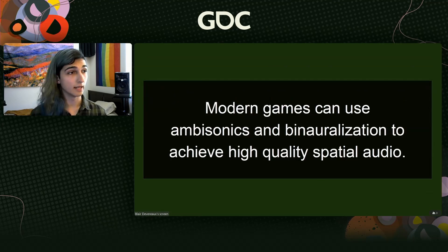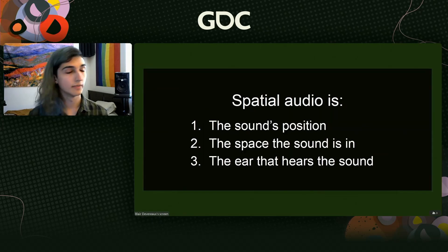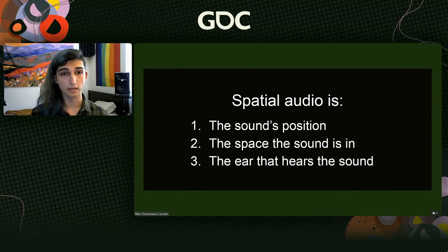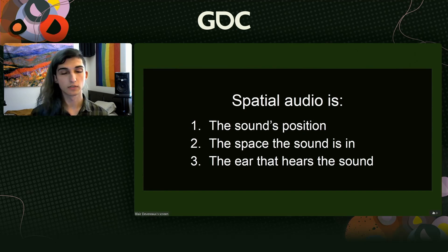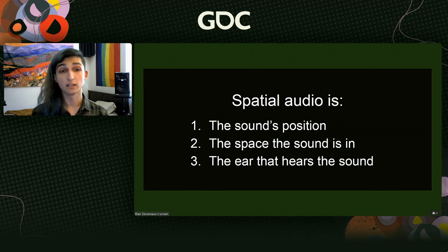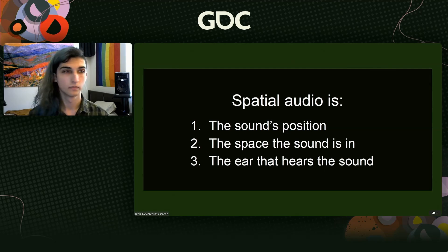I believe that modern games can use ambisonics and binauralization to achieve high-quality spatial audio. Ambisonics allows us to simulate the sound's position in a positionally accurate way, sampling an environment at up to 36 different channels. From there, we can simulate the reverberation of that space on those channels and convert it all into something the player can listen to, regardless of their speaker setup. Thank you.